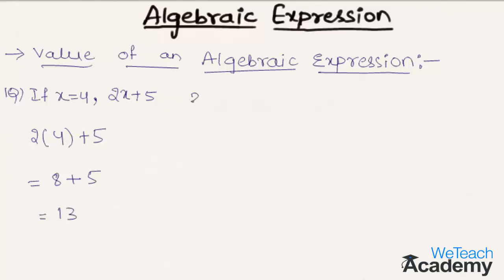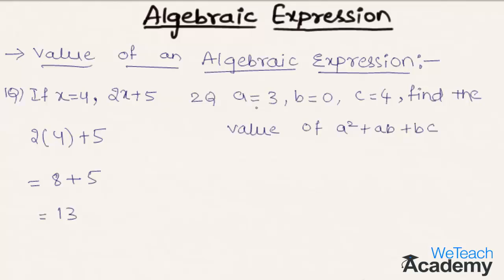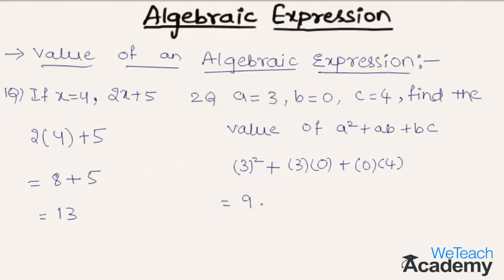Let us solve another example. If a is equal to 3, b equal to 0, and c is equal to 4, find the value of a square plus ab plus bc. Substituting the values: 3 square plus 3 into 0 plus 0 into 4. Simplifying, 3 square is 9, plus 0, plus 0. So the value of the expression is 9.